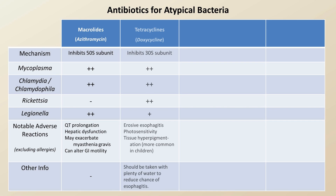Tetracyclines, which are usually limited to doxycycline in the US, cover all four atypical genera. Adverse reactions include erosive esophagitis, necessitating the patient to drink plenty of water and sit upright after administration. Also, doxycycline can cause photosensitivity and rarely tissue hyperpigmentation, which is more common in children.